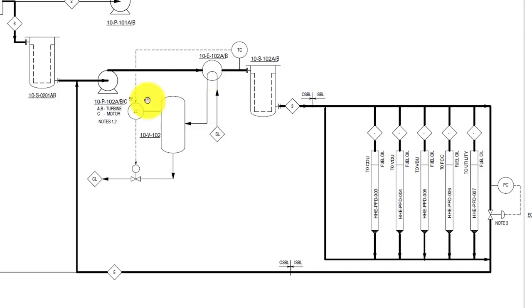You can see the temperature control loop also. Here you can see the battery limit of ISBL and OSBL. Fuel oil is supplied to various ISBL units' furnaces. On the ISBL side, you can see that one pressure control valve is given, which ensures constant pressure in the fuel oil loop.